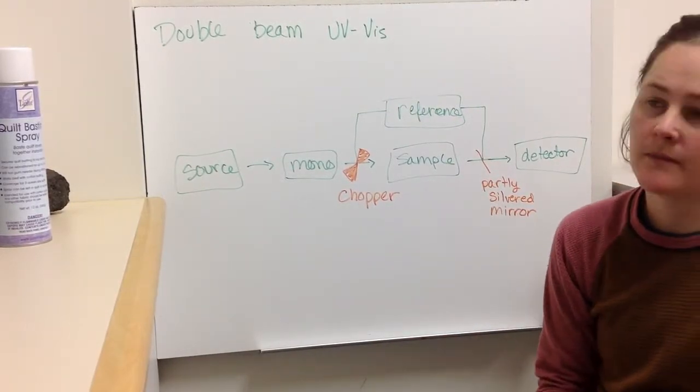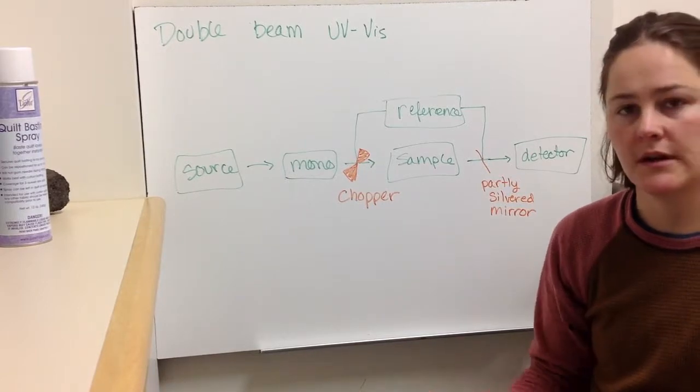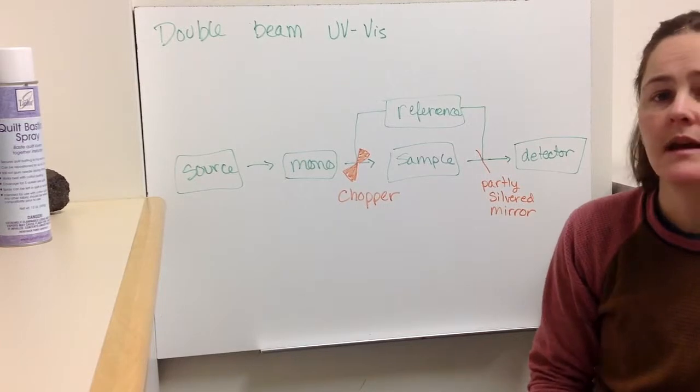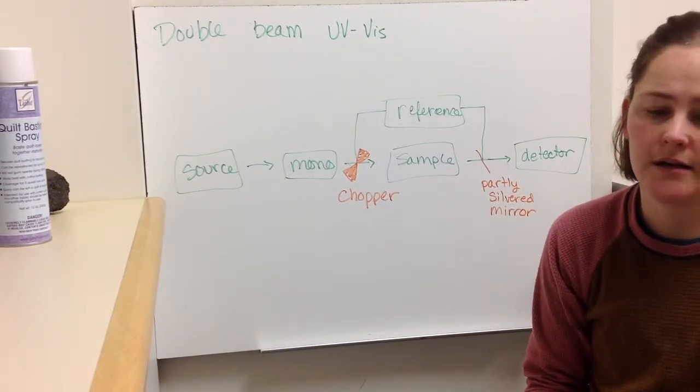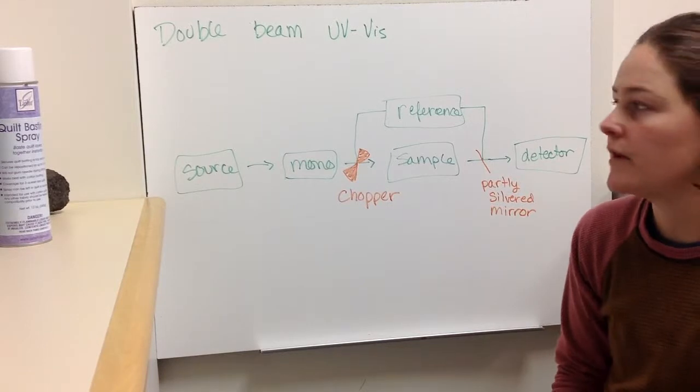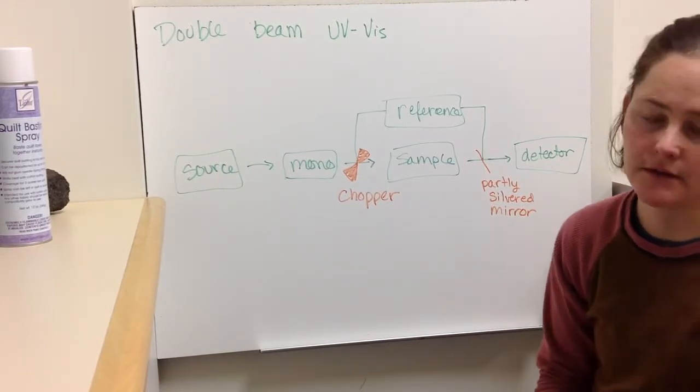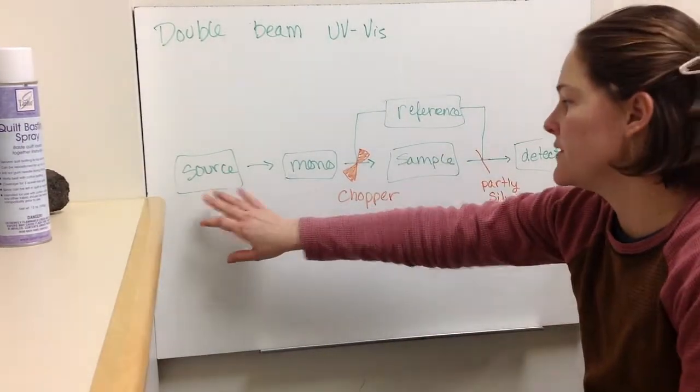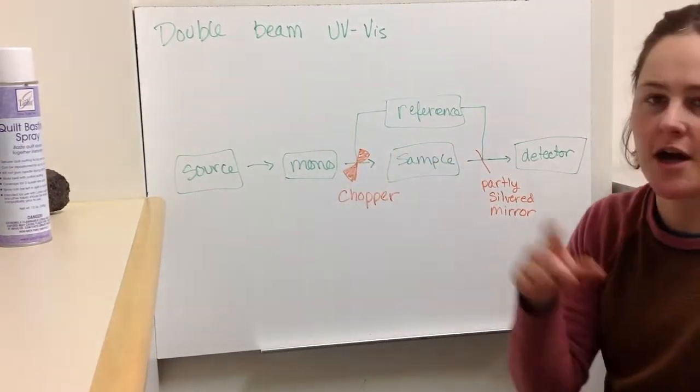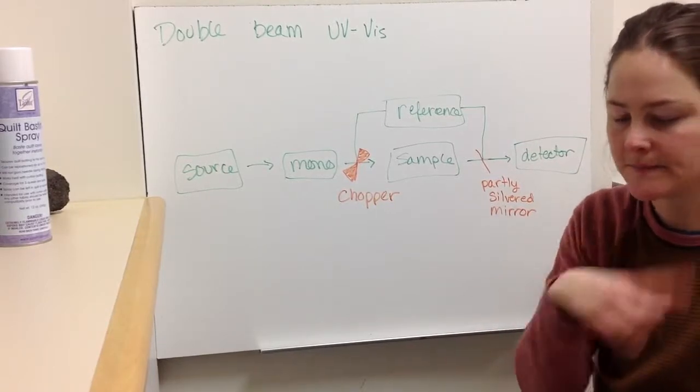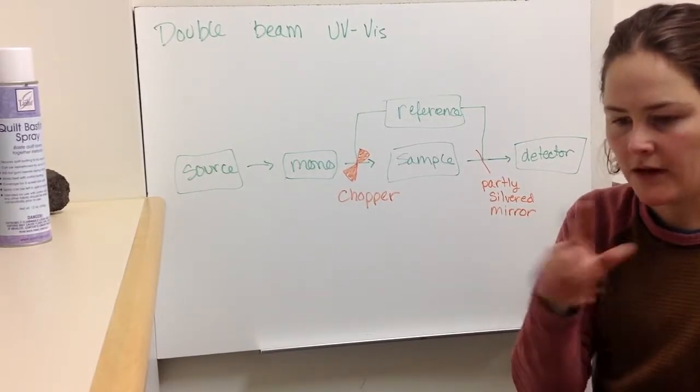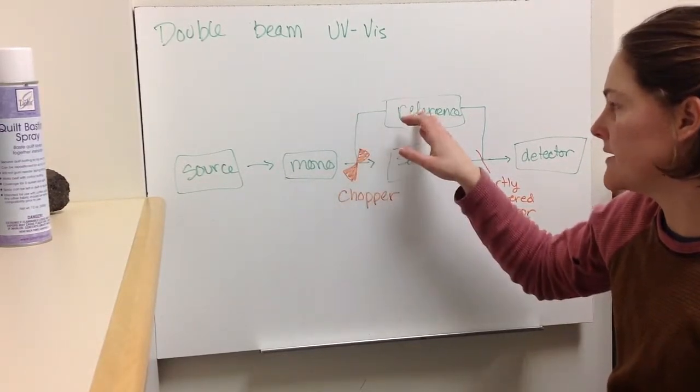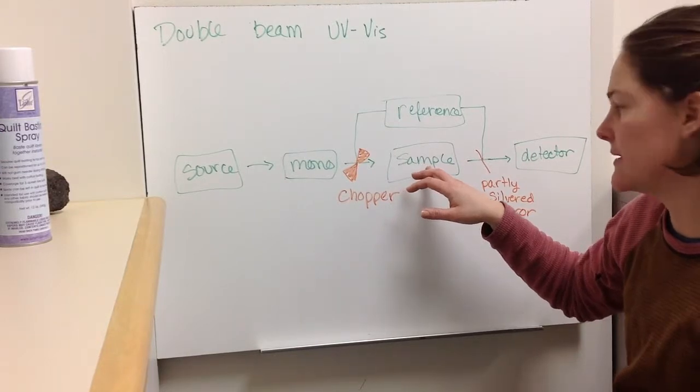So the first block diagram of an instrument was a little bit simplistic because if you want to have really good reproducibility, and you want to have the lowest signal noise possible, you want to do something like a double beam UV-vis. So where you have the source monochromator is the same, then you would have a physical chopper that rotates through. And so part of the time the light is getting bounced off and going to the reference, and part of the time it's just going straight through, through the sample.